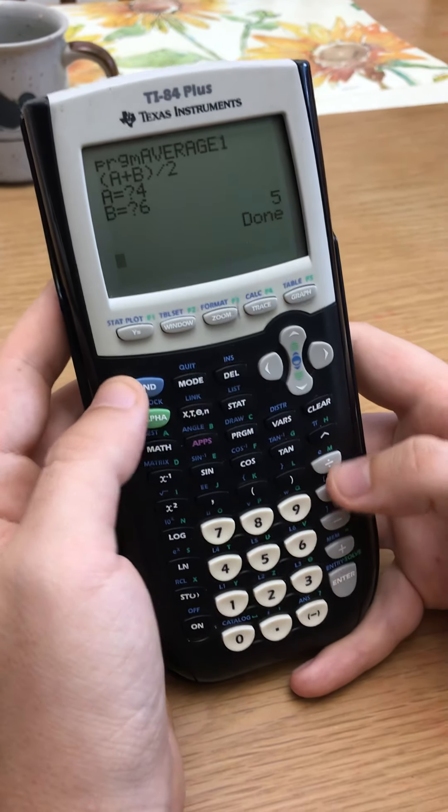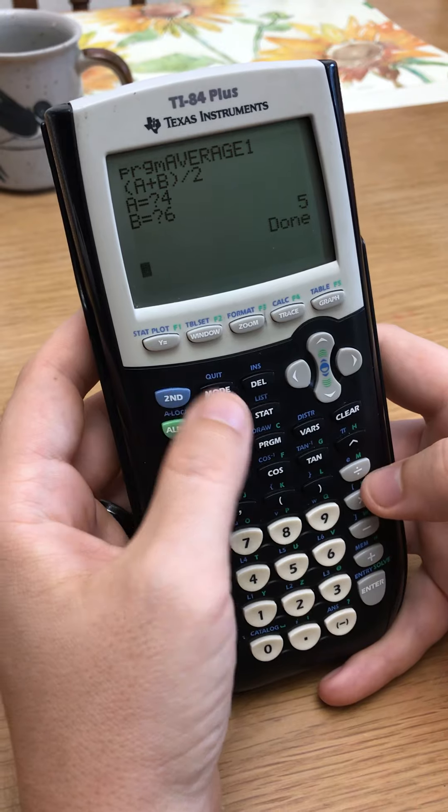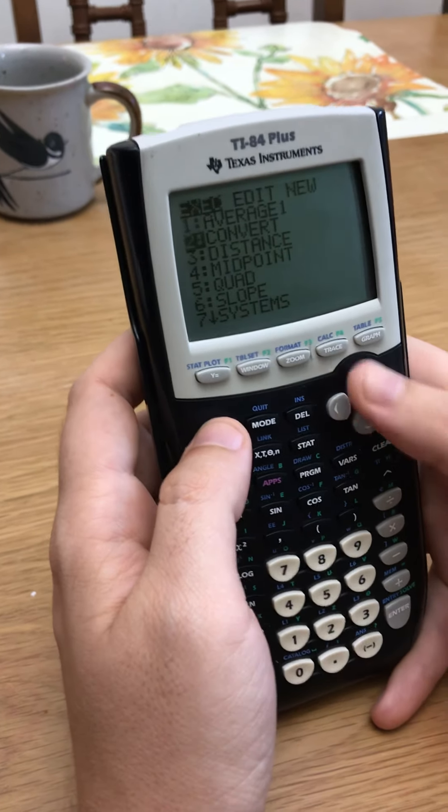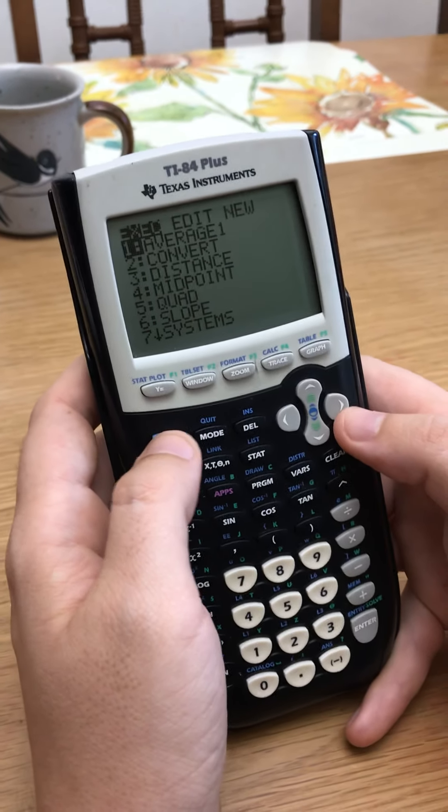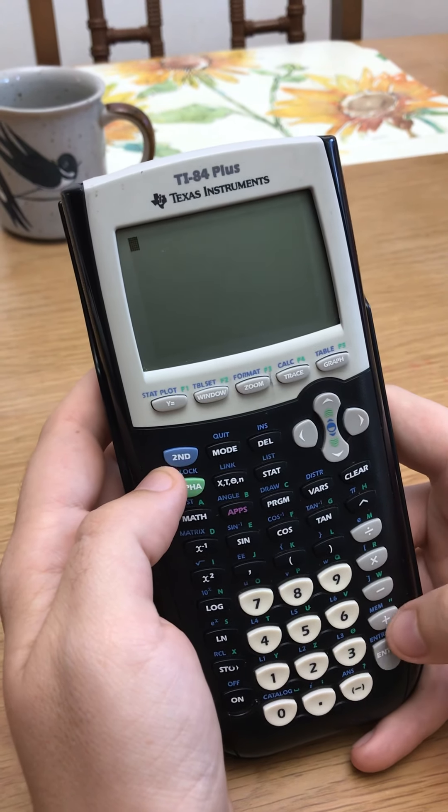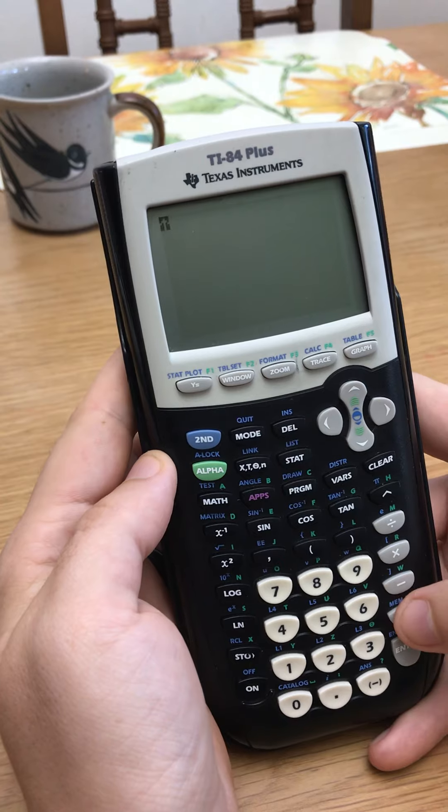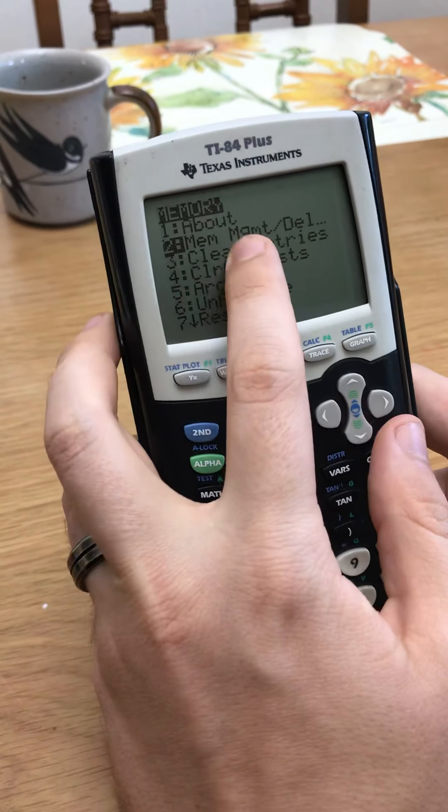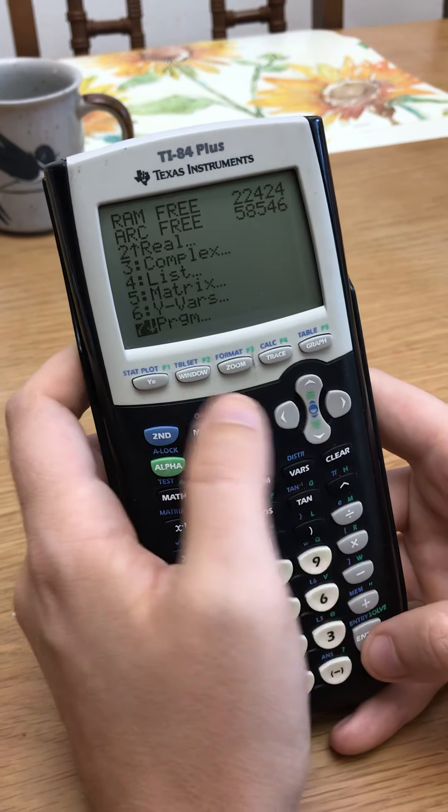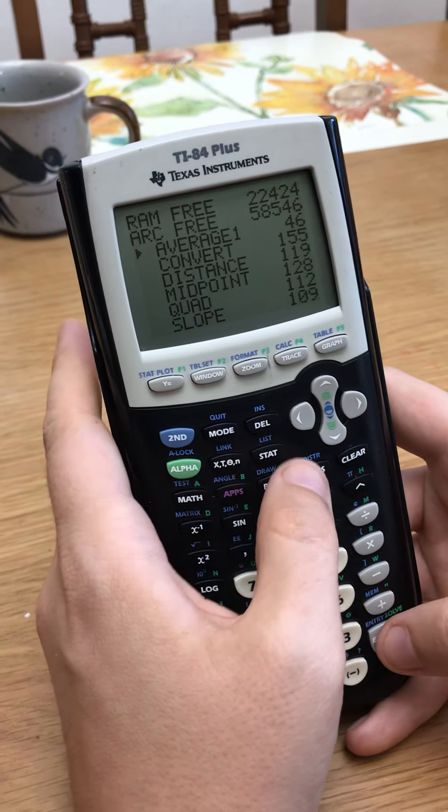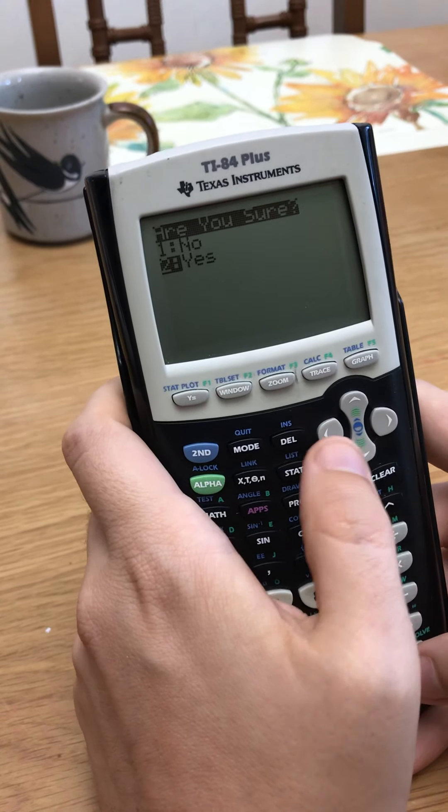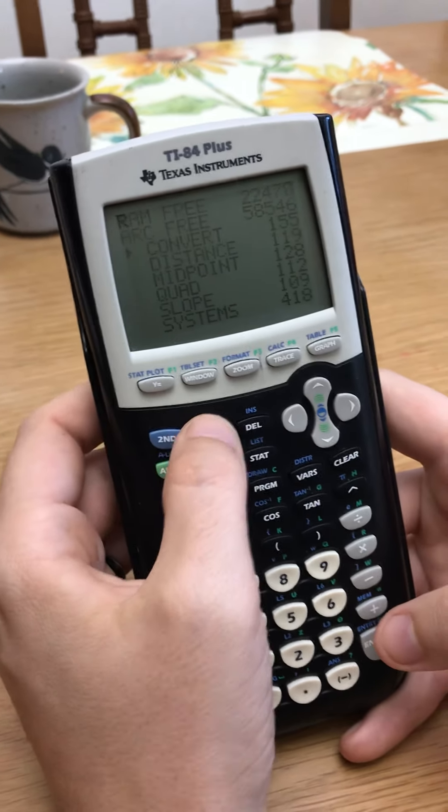All right. So let's say you named your program something funky or you just don't like the program. Because I don't really need this program. Taking the average is not that hard to do. So it's not really needed to have that program in there. How do I get rid of it? All right. So here's what you do. Go back to your main screen. You don't have to clear it necessarily. But you go second and then this plus down here, memory, memory management. And then you can either scroll down or you can hit the key seven. If you scroll down here, it says program. So you want to manage your program and then you select it and then delete it. And it'll say, are you sure? Yes, I'm sure. And then it's gone.